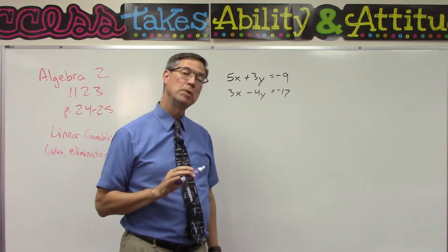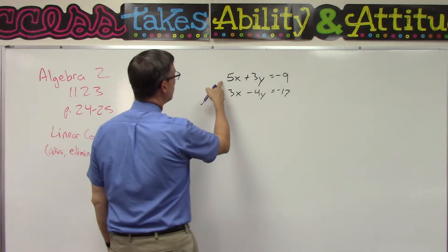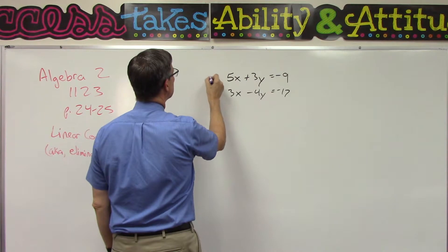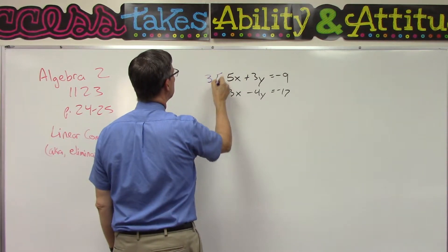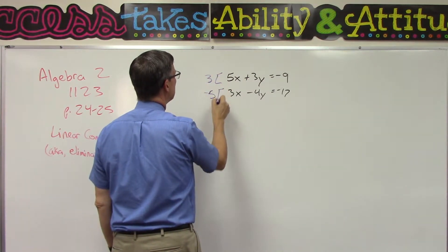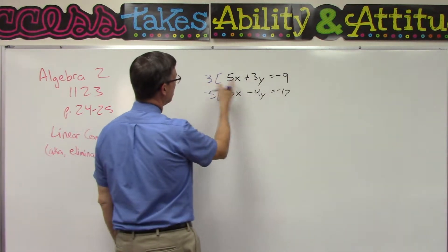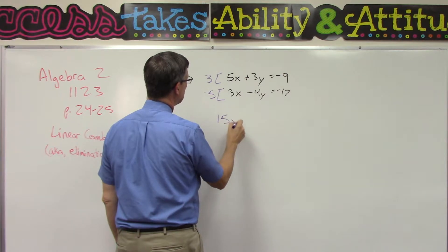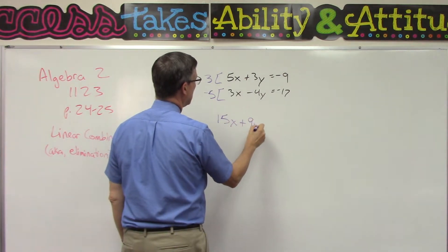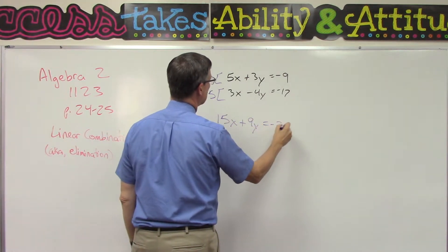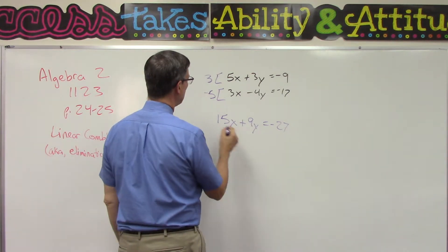I'm going to take this equation and get rid of x. So I'm going to take this equation and multiply everything by 3, and in this equation, everything by -5. Let's see what happens. We get 15x + 9y = -27.